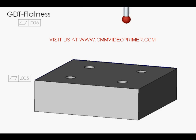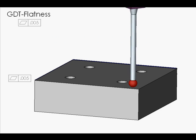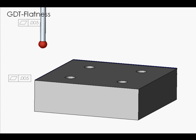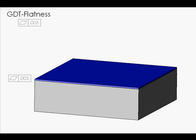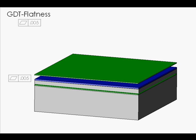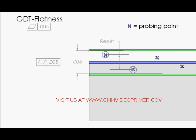A best fit surface is calculated from CMM probings. Tolerance zones with separation equal to the specification are created parallel to the best fit surface. High and low probing points are evaluated relative to the best fit feature.